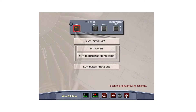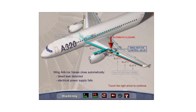The amber fault light illuminates if the wing anti-ice valves are in transit, are not in the commanded position, or low bleed pressure is detected. The wing anti-ice valves close automatically if a bleed leak is detected in the system or the electrical power supply fails.